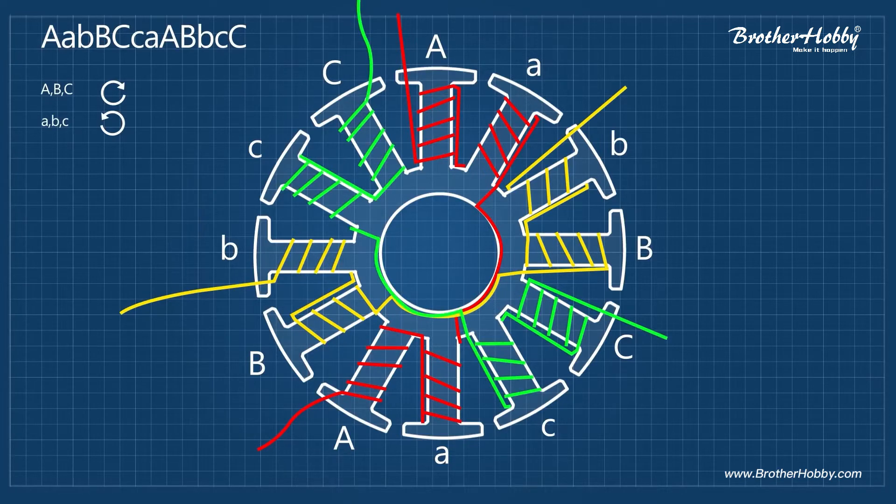After you finish winding you should end up with six different wires. And now you have to select a termination. There are two different terminations, the delta and Y.